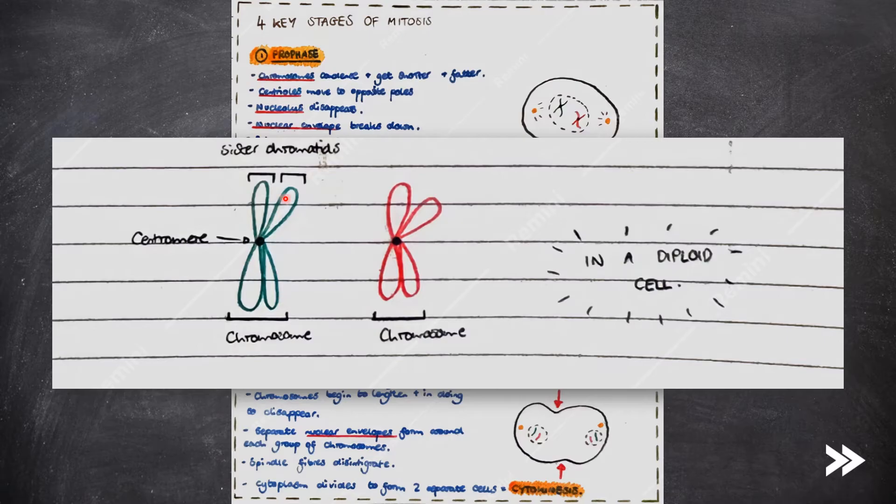Here we have sister chromatids, and this overall is referred to as a chromosome. The sister chromatids are joined together by a centromere. This occurs in a diploid cell.